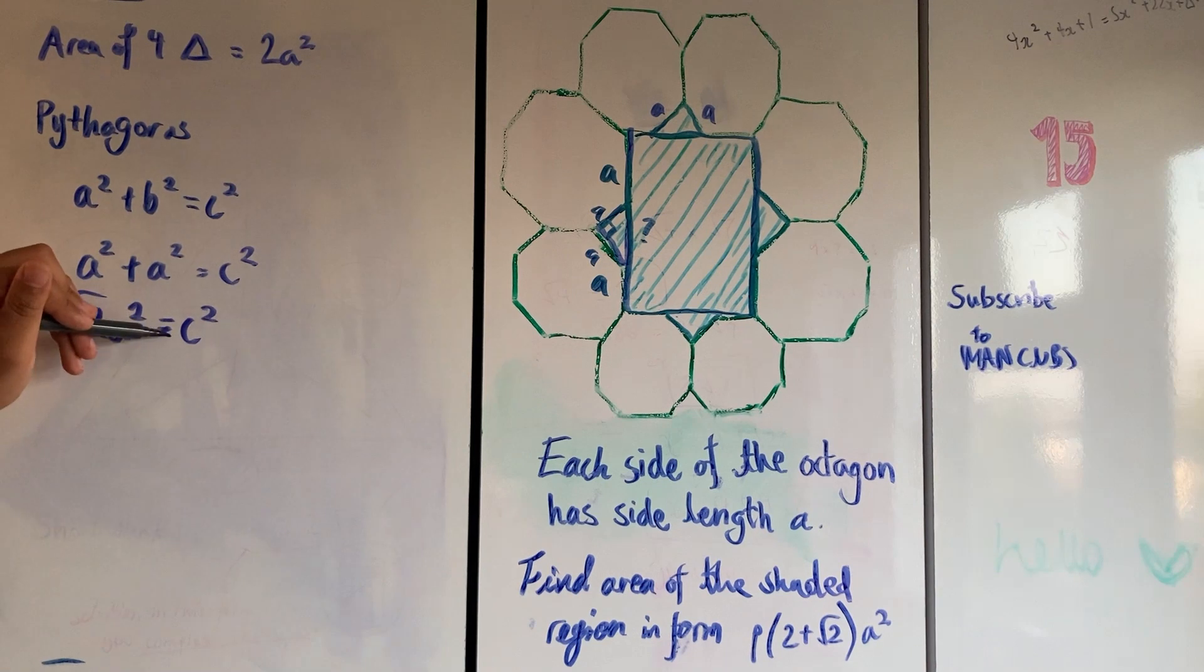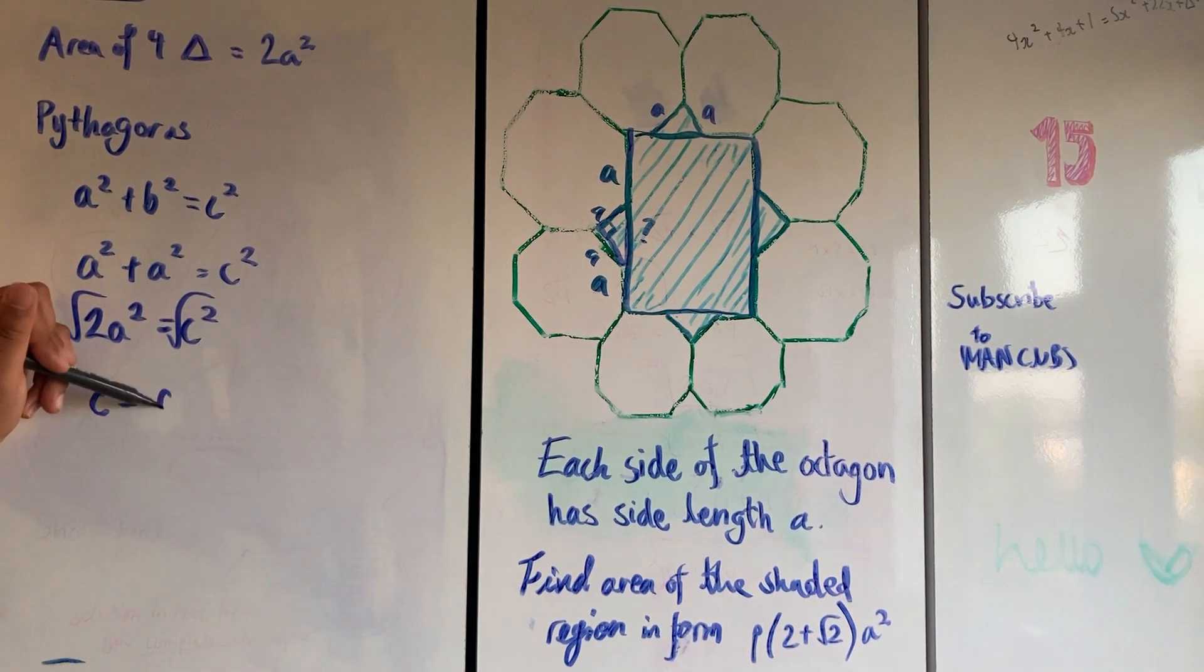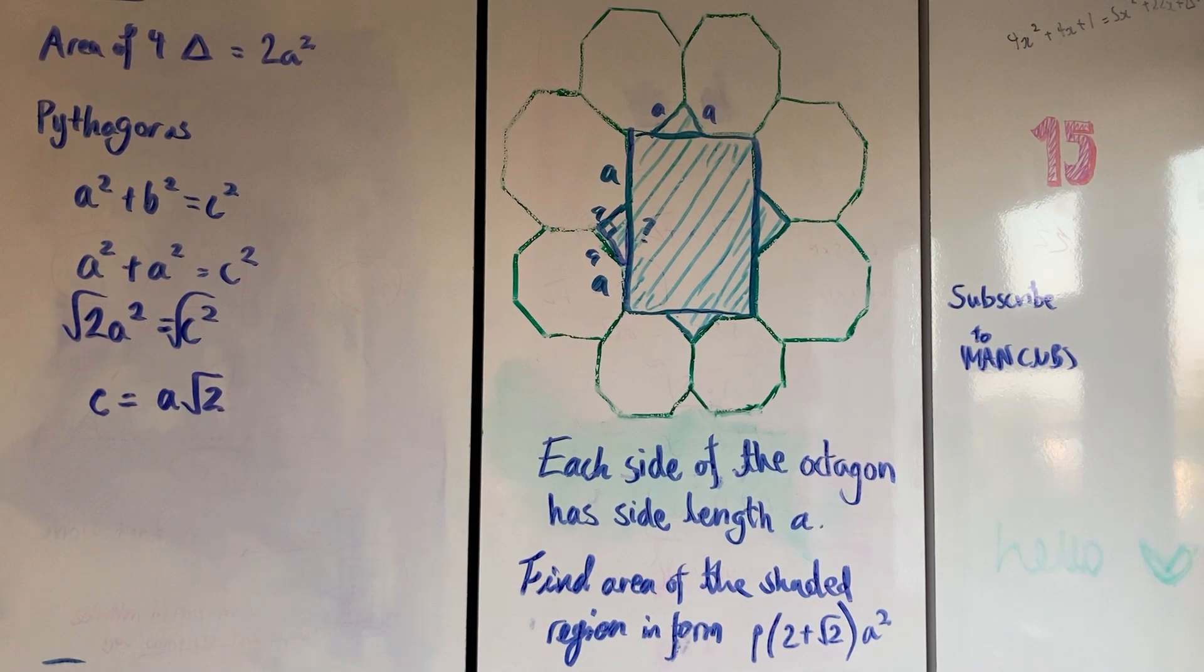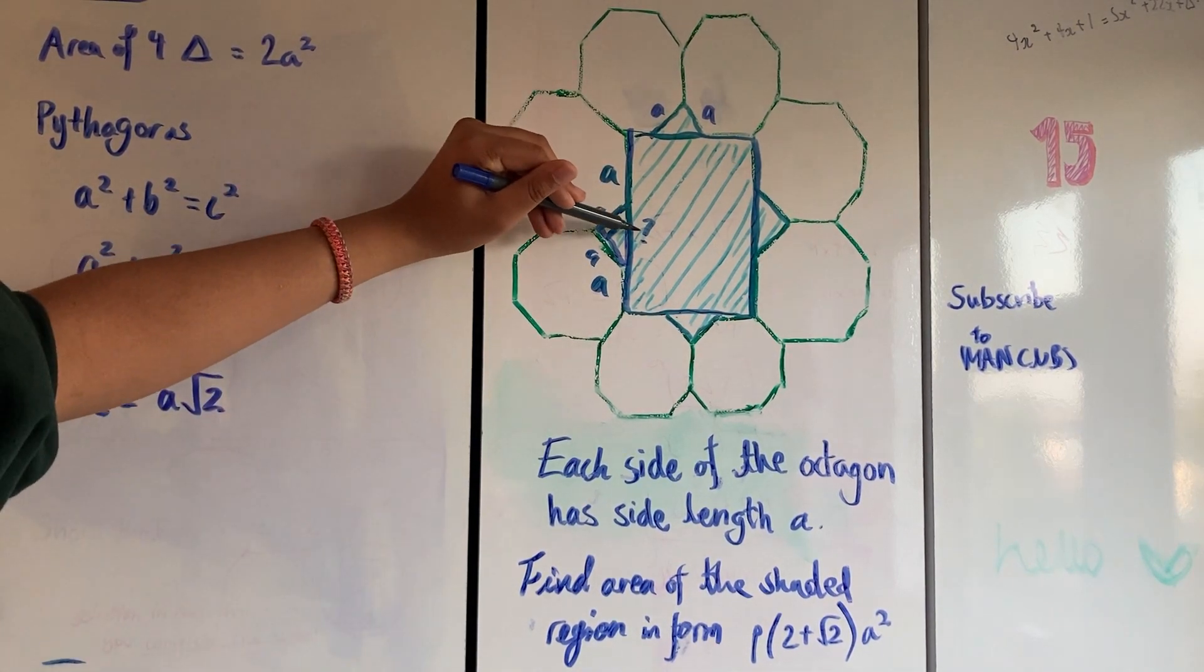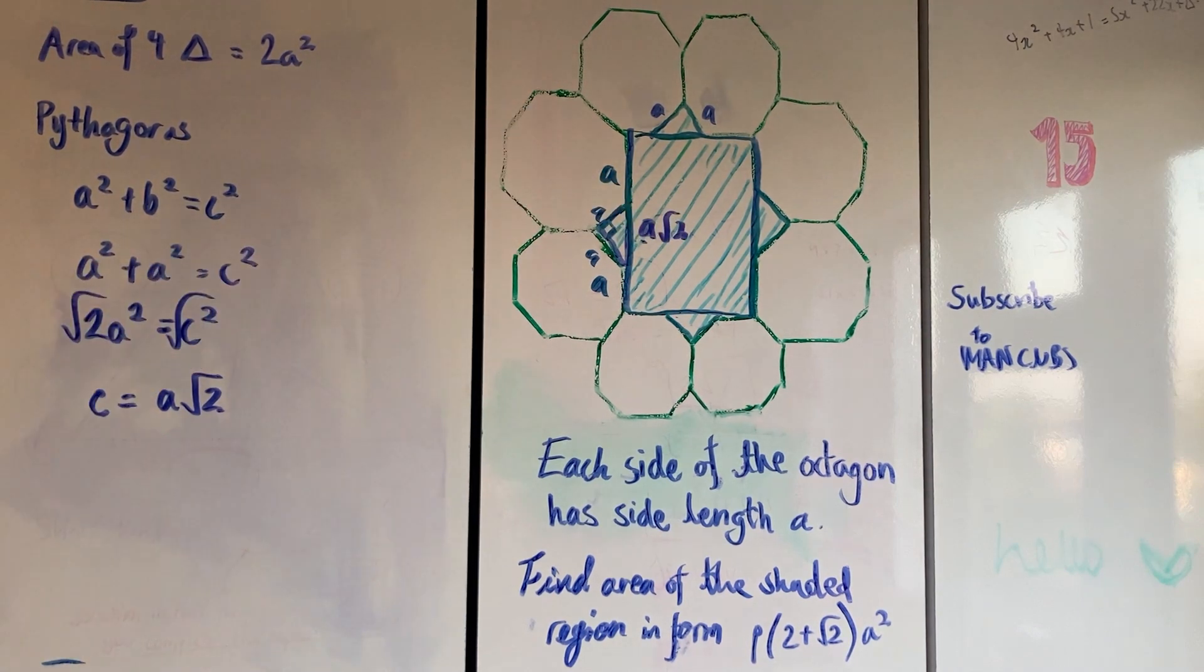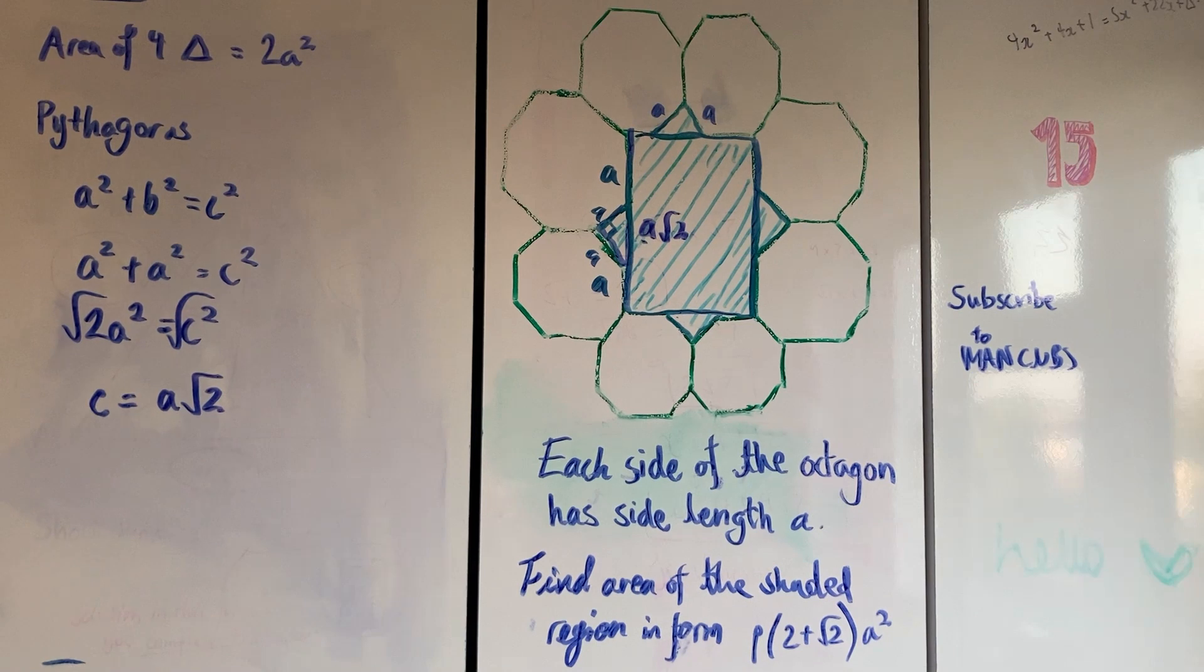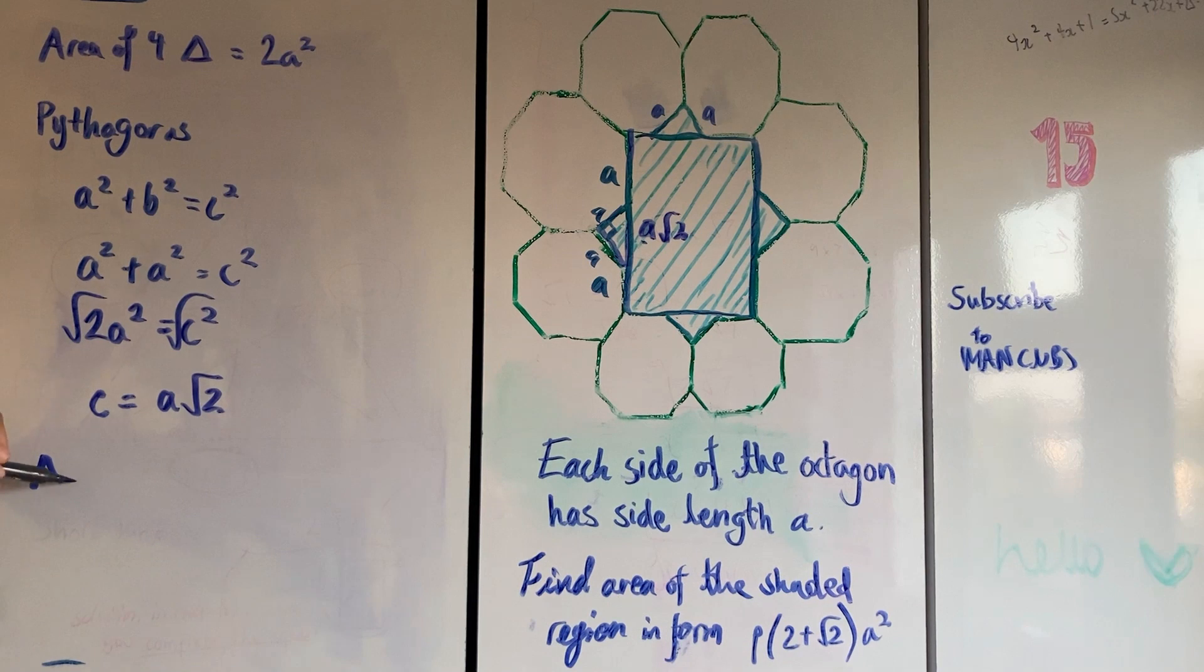So c is going to equal... if we square root a² we get a, if we square root 2 we get √2, so I'm writing it as a√2, the nicest form you can write it in. We know that that length is going to be a√2. So now we have the entire height of that square, and we know it's a square because the octagons are all the same. So we can just multiply that by itself.